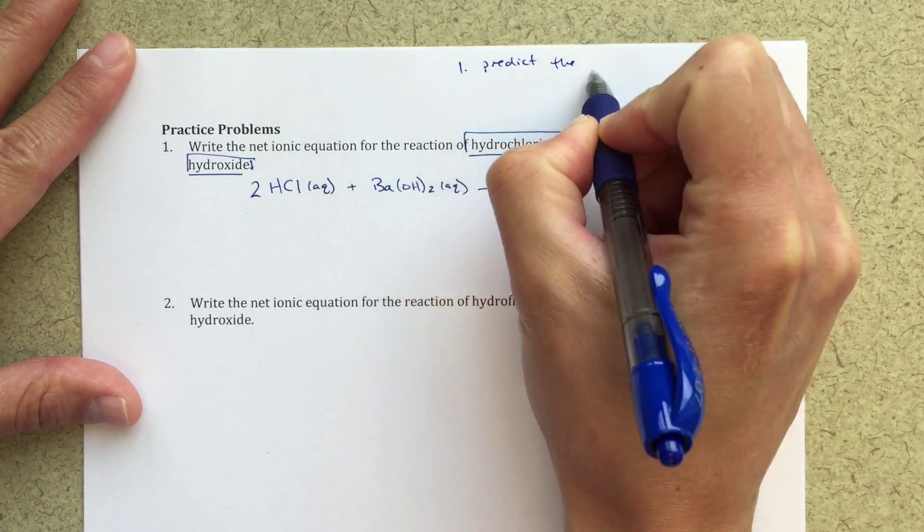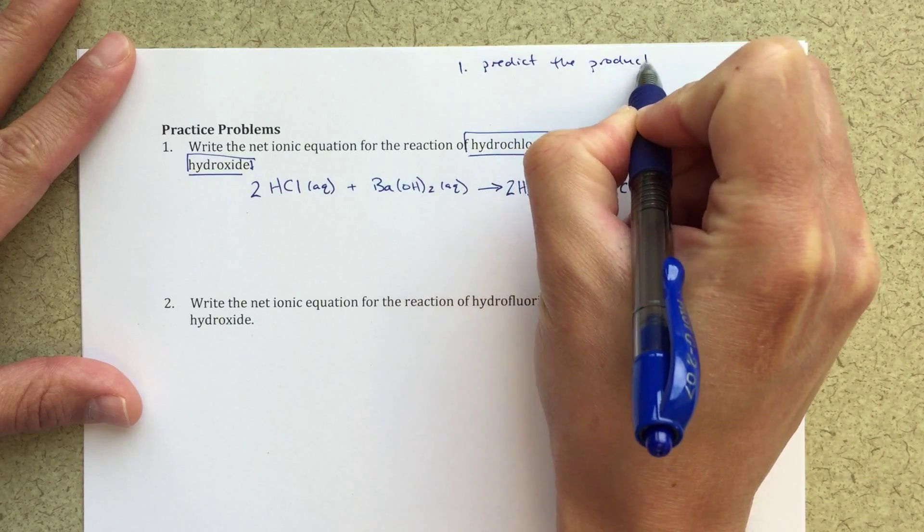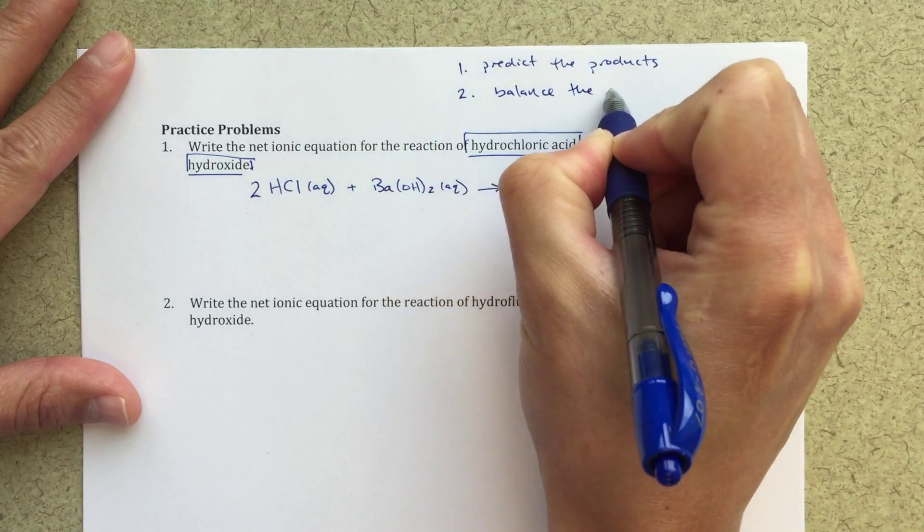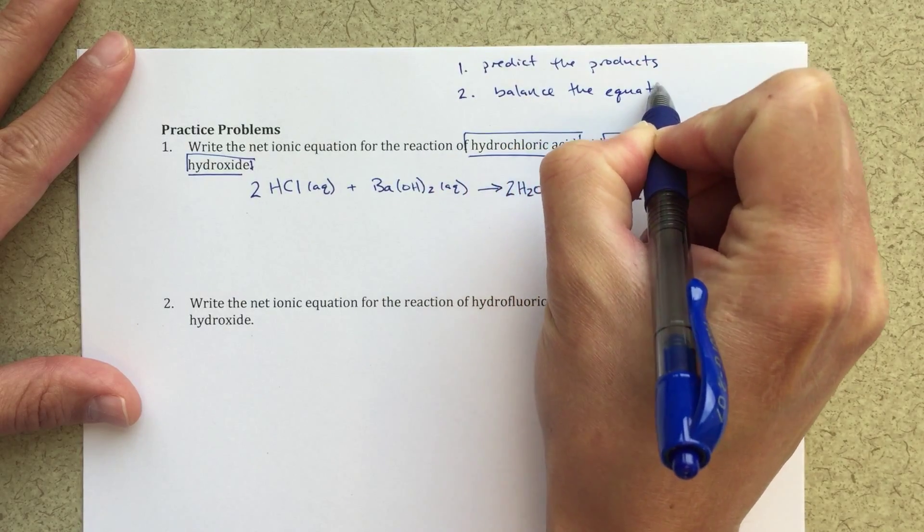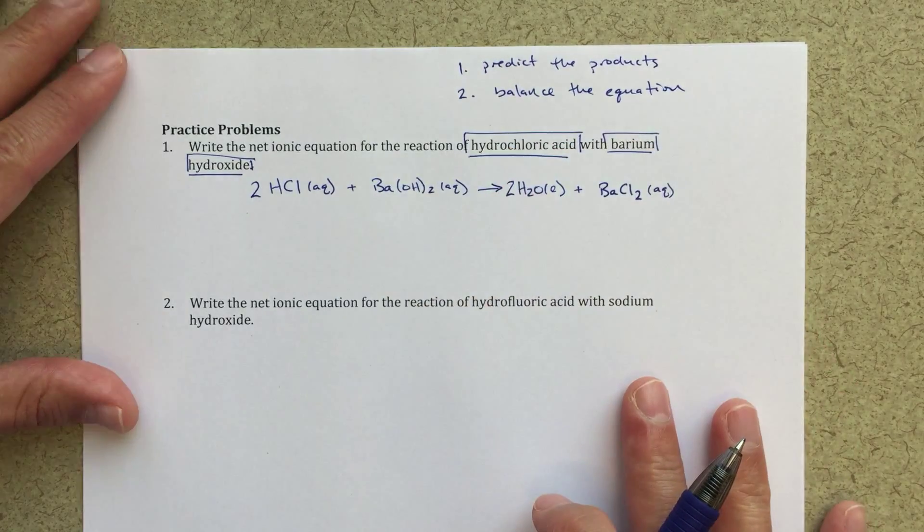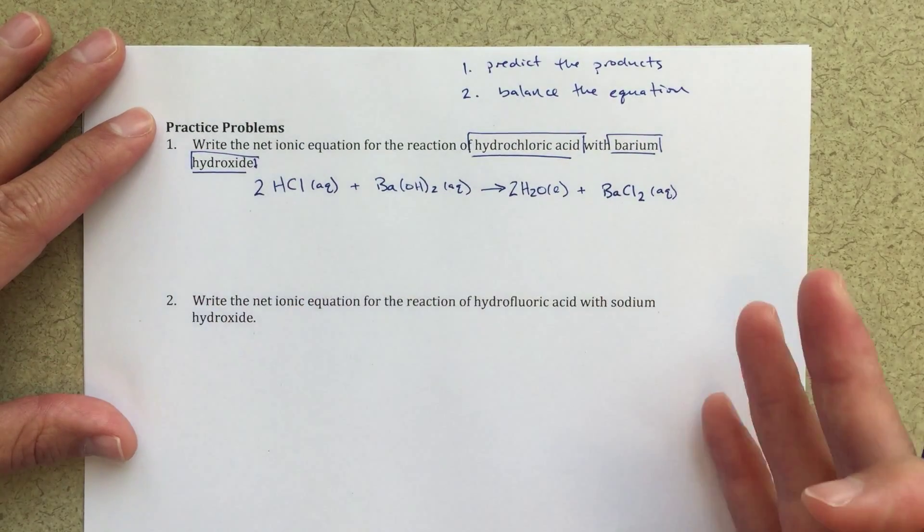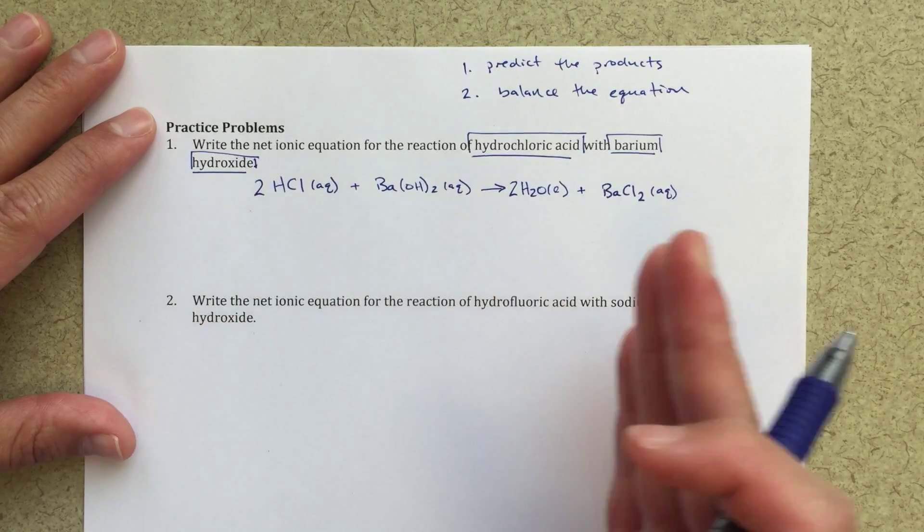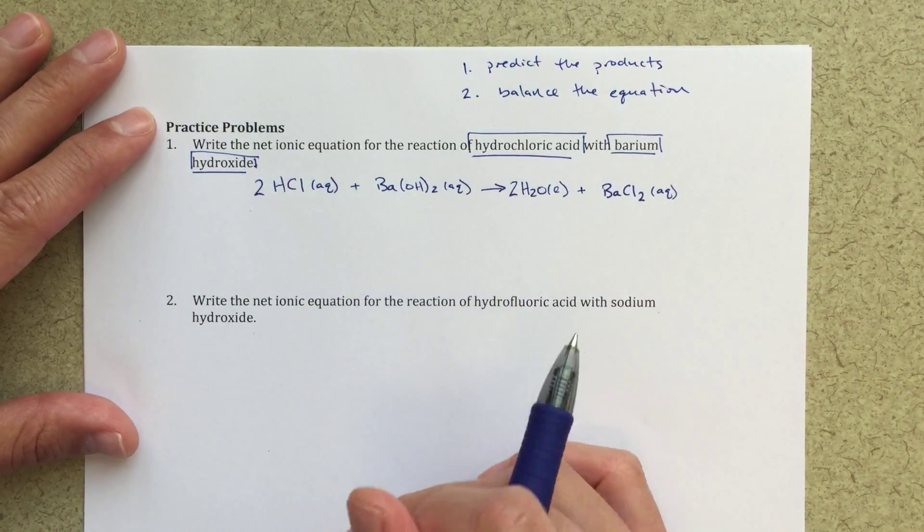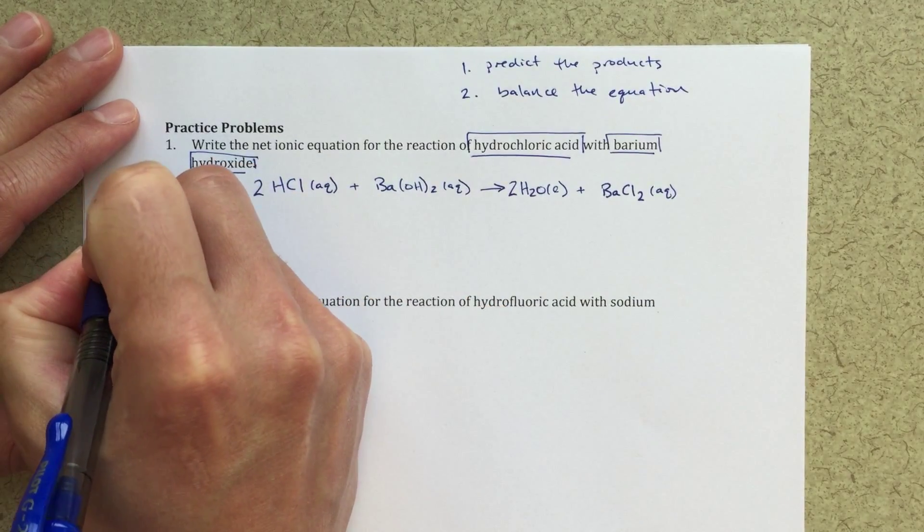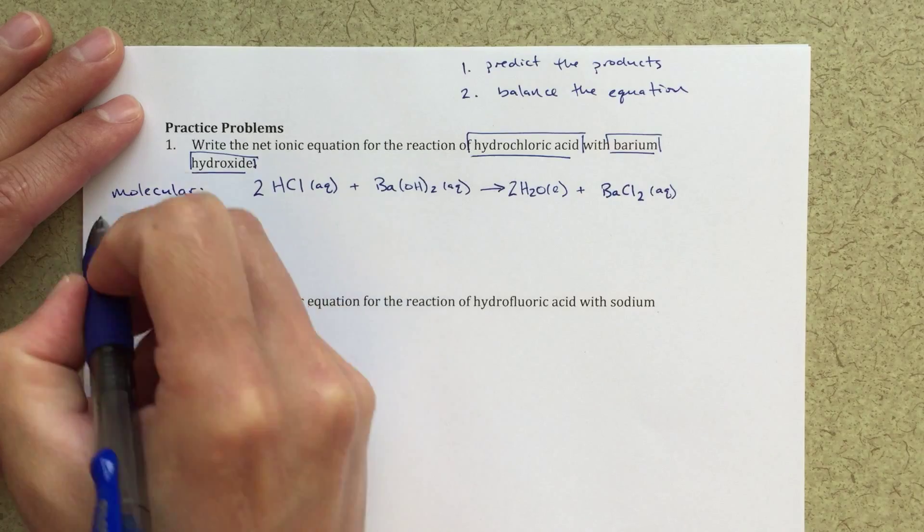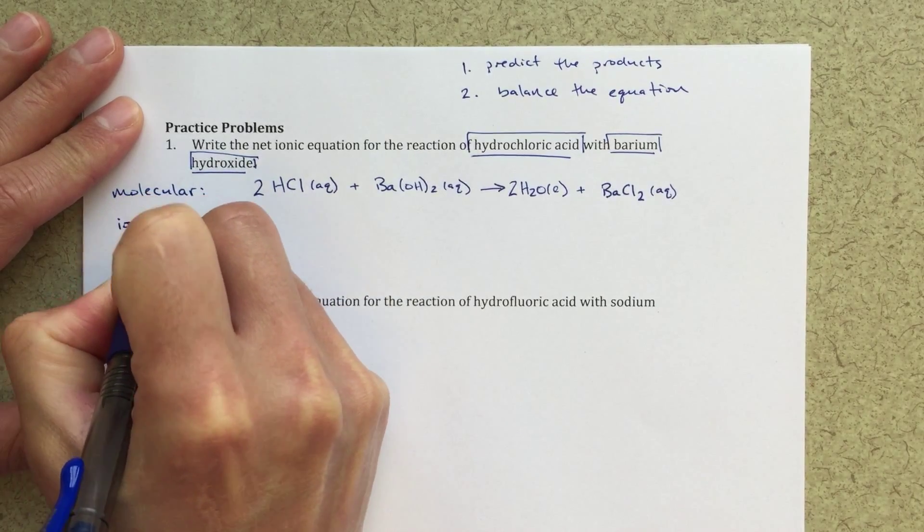Step one, predict the products. Step two, balance the equation. I really want to stress this step two, worrying about balancing the equation, because I saw a lot of people today trying to do all of this at once. It's gonna be too much, you're gonna get confused. Just do one thing at a time.